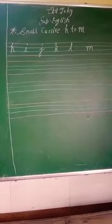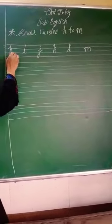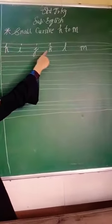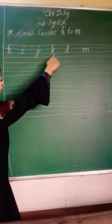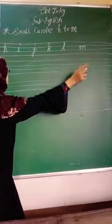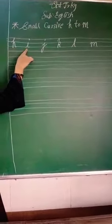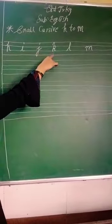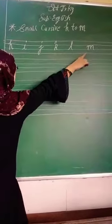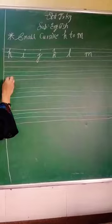Okay, see. First read this: H, I, J, K, L, M. H, I, J, K, L, M. Let's see how to write.